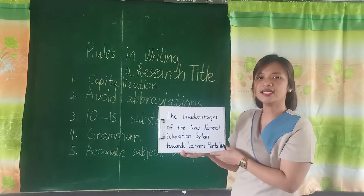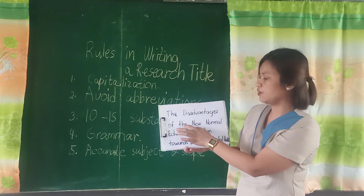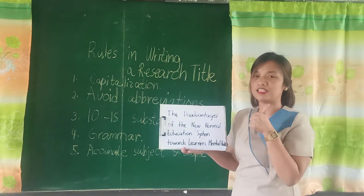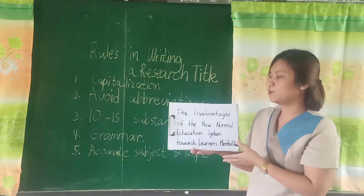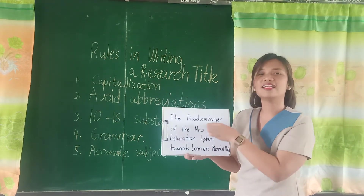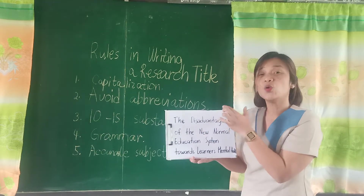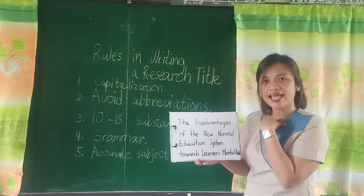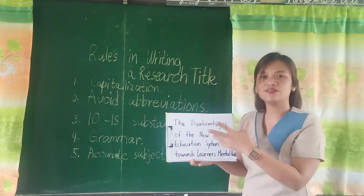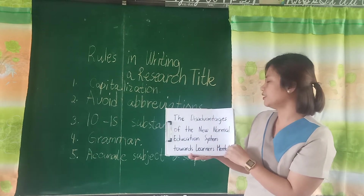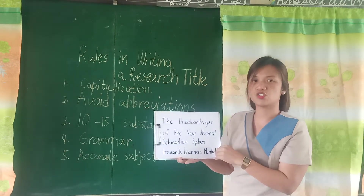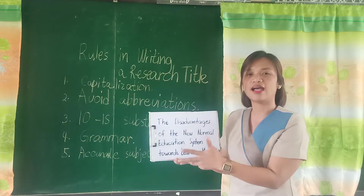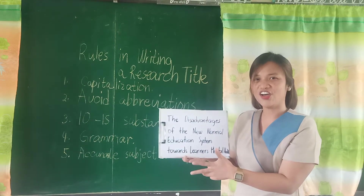Counting the substantive words: 1, 2, 3, 4, 5, 6, 7, 8, 9, 10, 11, 12 — it fits within the required range. Grammar is okay. We stuck to disadvantages only — we did not include advantages, because as I said, advantage if advantage, disadvantage if disadvantage. Accurate subject and scope are clearly presented. The scope and subject of the study are clear.